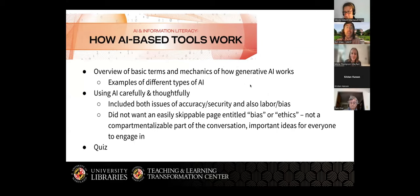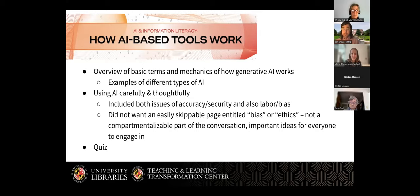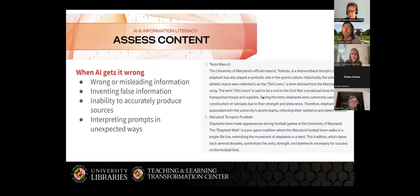Our first section had an overview of basic terms and mechanics — what all the letters in GPT stood for, how AI tools go about generating a response. This is where we pulled in videos from our partners at the Department of Computer Science and AI experts as well. We also explained issues of AI bias and labor — what might be termed ethical issues — in a section called Using AI Carefully and Thoughtfully, covering accuracy, security, labor, and bias. We didn't want a page that was easy to skip called 'ethics,' because we don't think that's a compartmentalizable part of the conversation. At the end, there's a quiz where students can check their work, usable as an instructor assignment or to reinforce concepts.